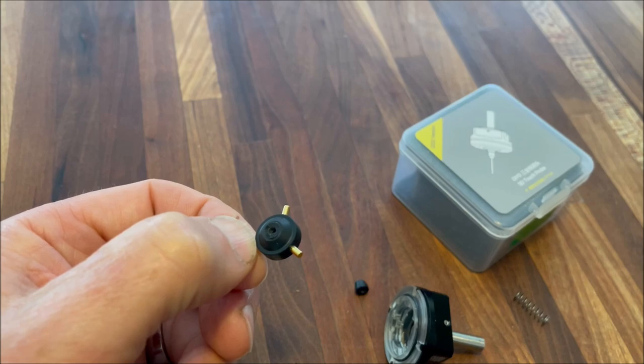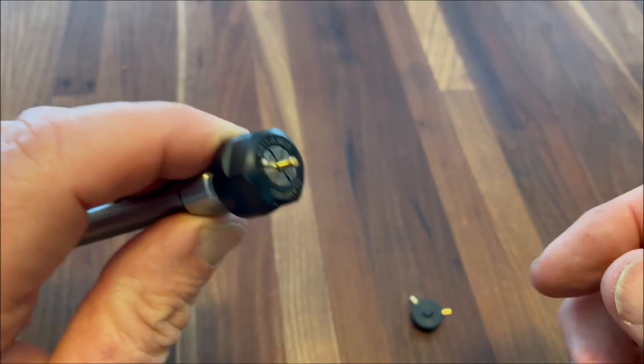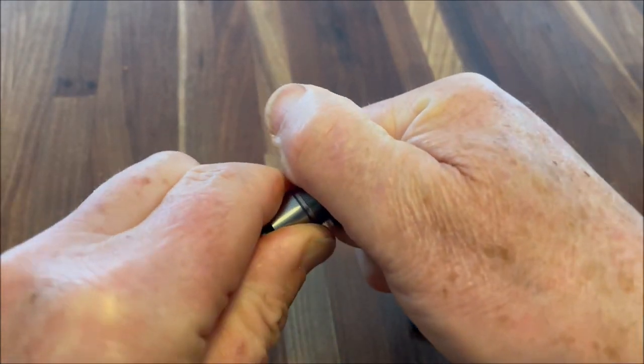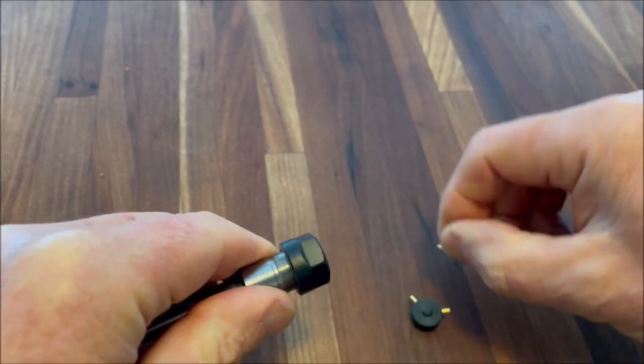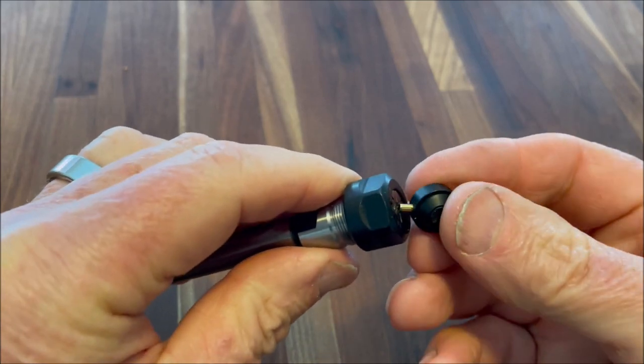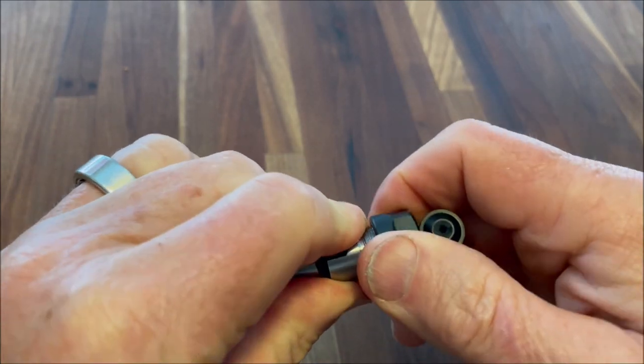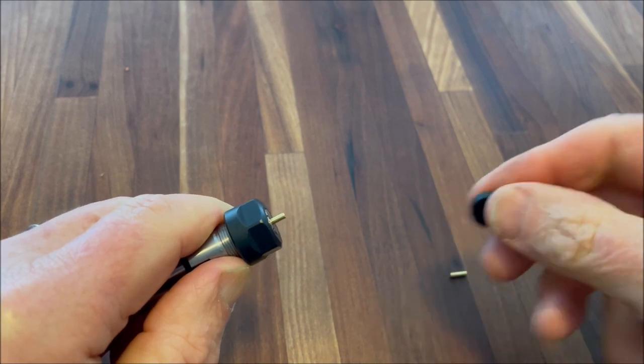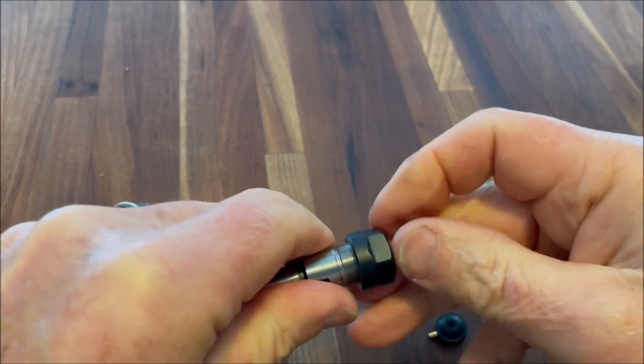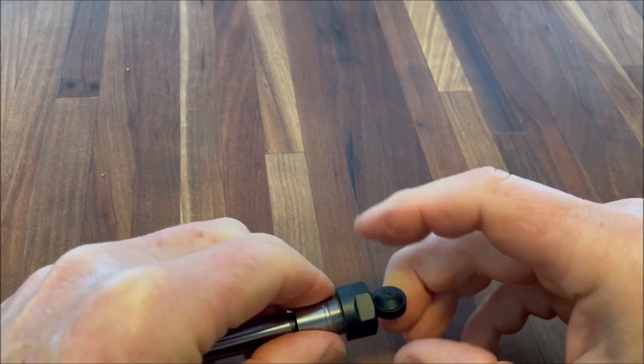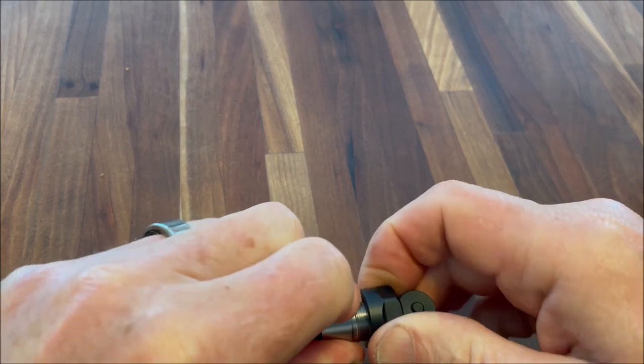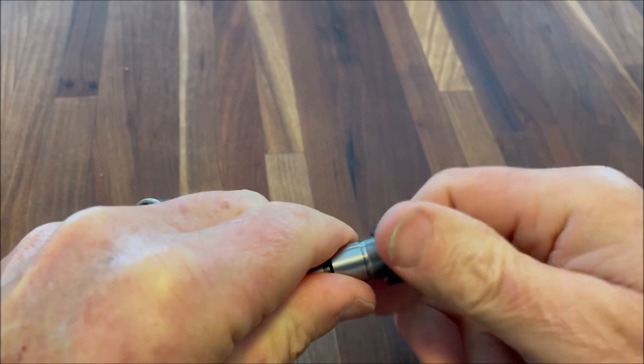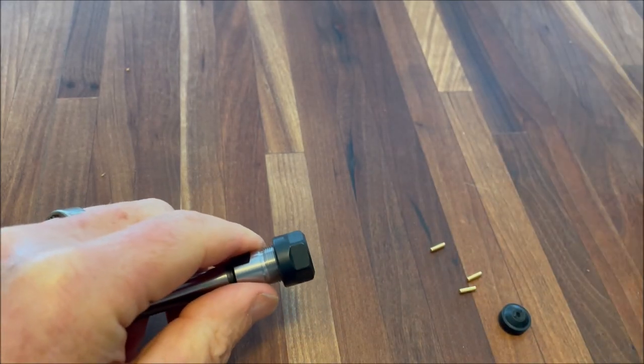I'm using a little ER11 collet to pull these pins out without marring the gold coating. Just put it in there, tighten up the chuck, and then gently twist on it and it comes out. You could probably use a drill chuck if you wanted, but that might be more inclined to mar it than a spring collet. Pretty quick to get the three pins out.